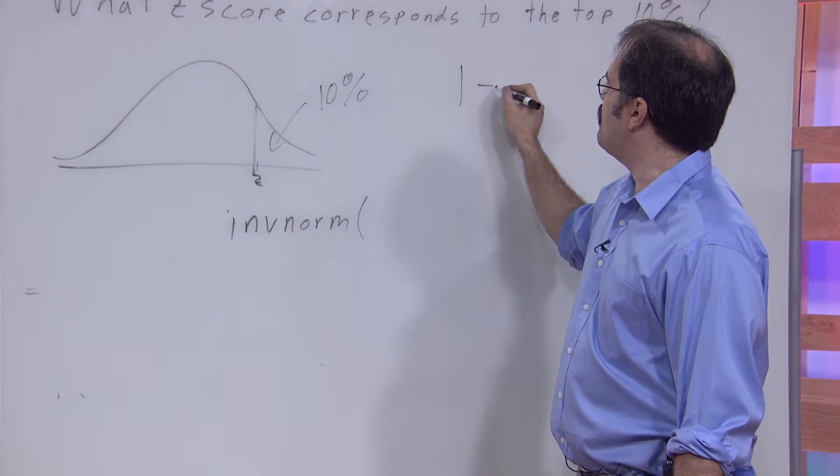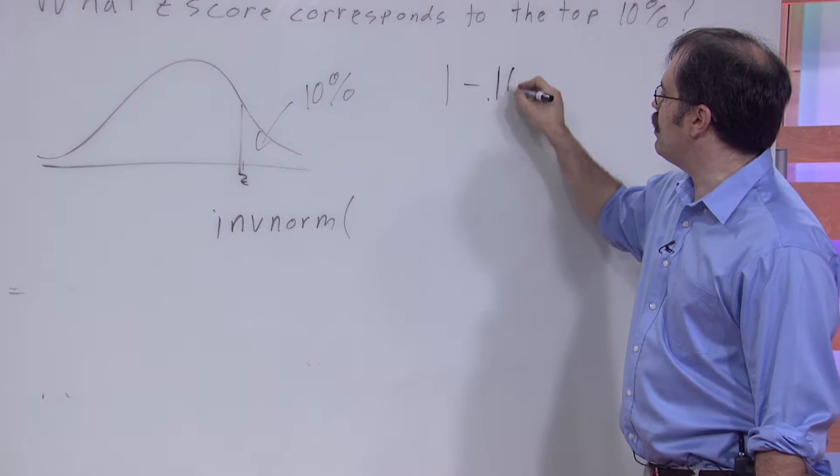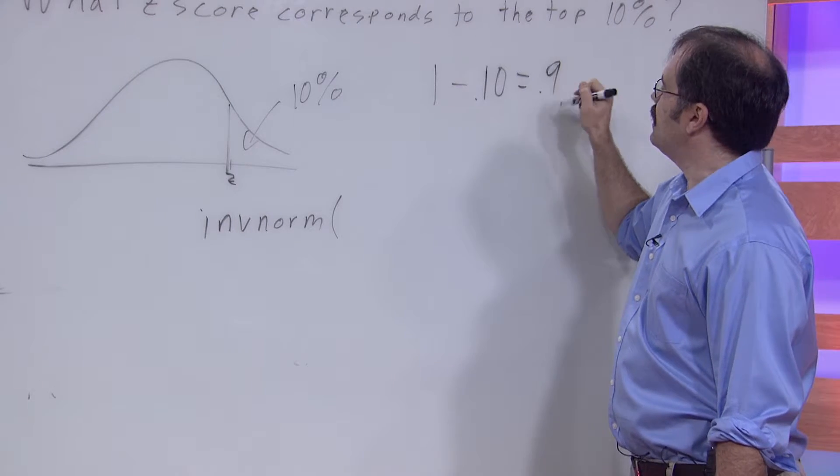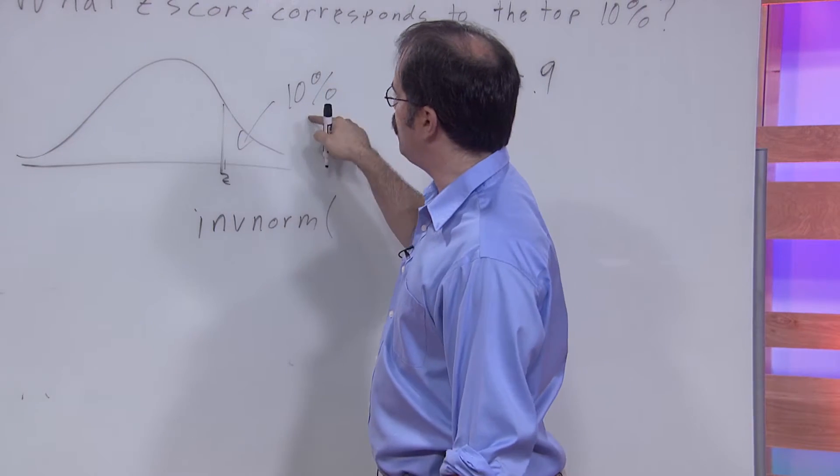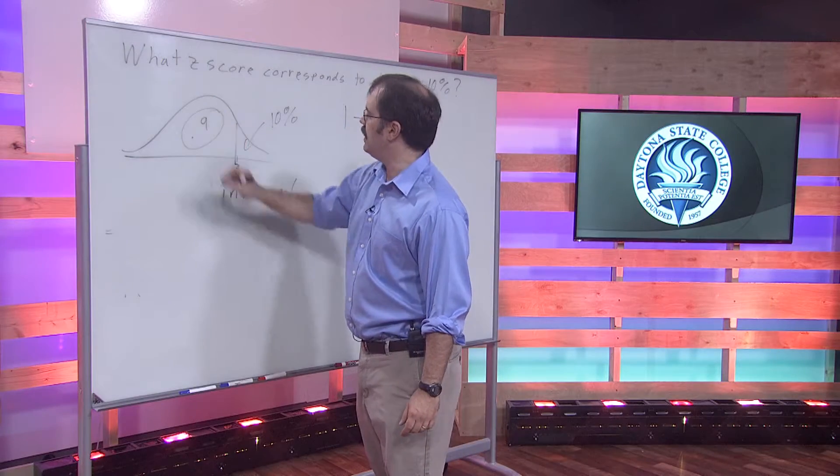So if you do 1 minus this 10%, remember 10% is written as .10, that says that the area to the left is .9. 10% here means that we have .9 over here.